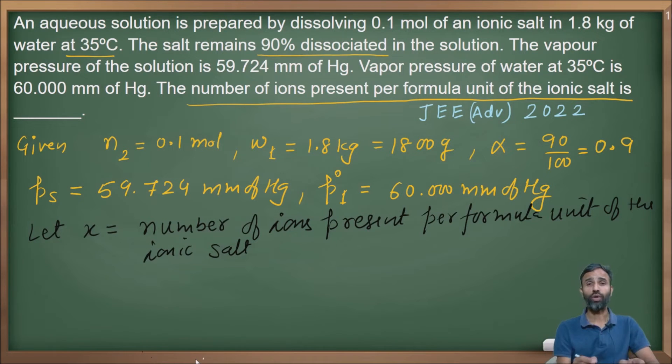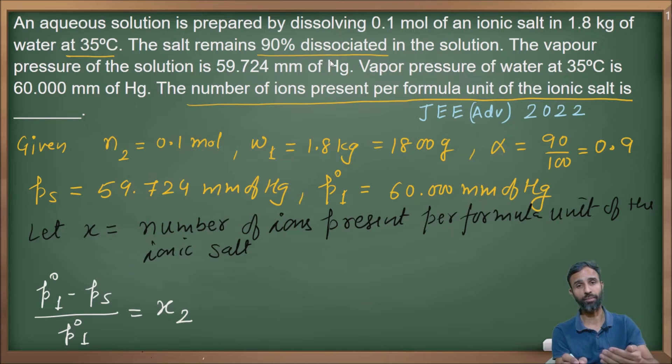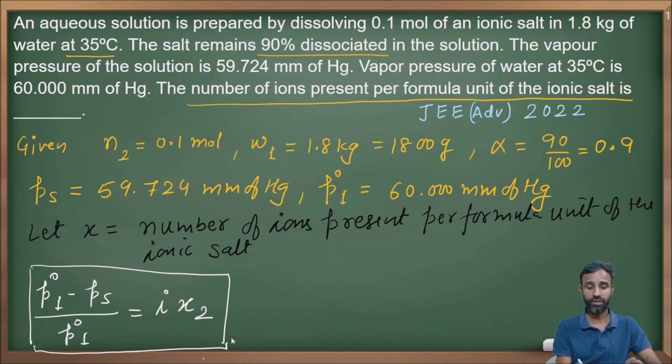The formula used is (P₁⁰ - Ps)/P₁⁰ = i × X₂. Here we put i before X₂ because the solute is dissociable. This is the modified colligative property—there is an abnormality in colligative property because the salt dissociates.